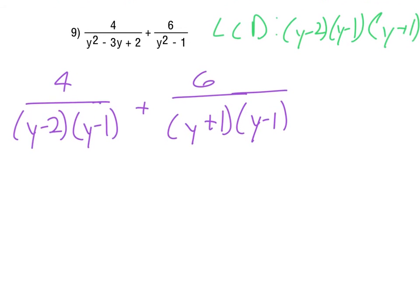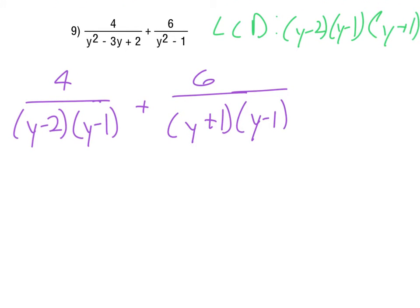In this case, I think I'm just going to sneak these in here. So the 4 has the y minus 2 and the y minus 1. It does not have the y plus 1, so we'd multiply top and bottom by that. The 6 has the y plus 1 and the y minus 1. It does not have the y minus 2, so we'd multiply top and bottom by that.